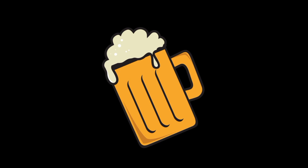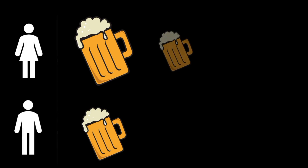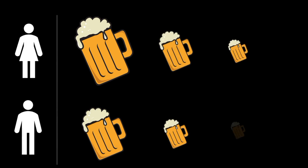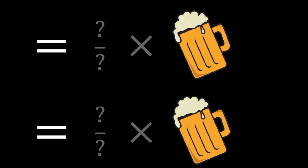You and your date go into a pub and order a pint of beer. She drinks half of it, you drink half the remainder, and this continues on and on. How much of the pint does your date drink and how much do you drink?